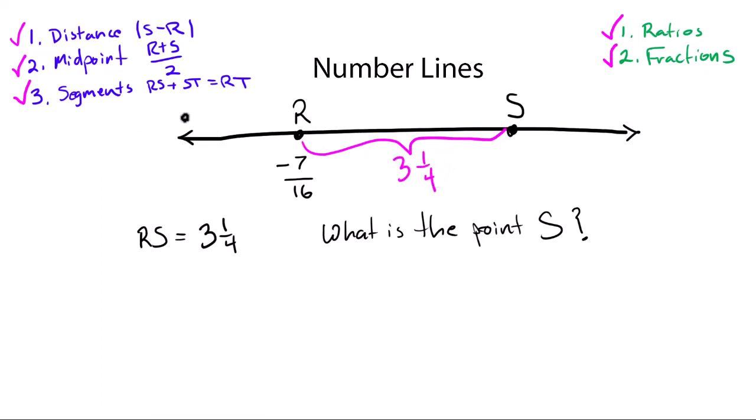Now applying our segments, we know r plus the segment length rs equals the point s. Well, r is minus seven sixteenths, and we add to that three and a quarter to get s.